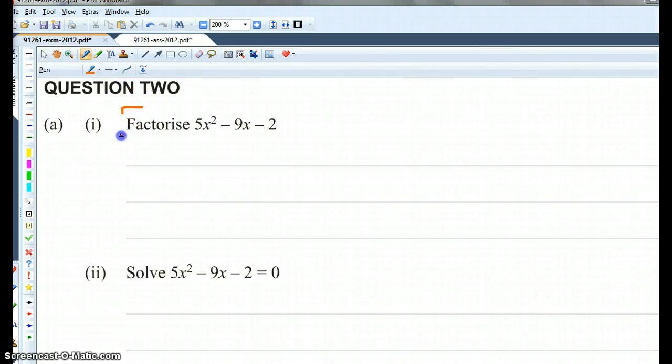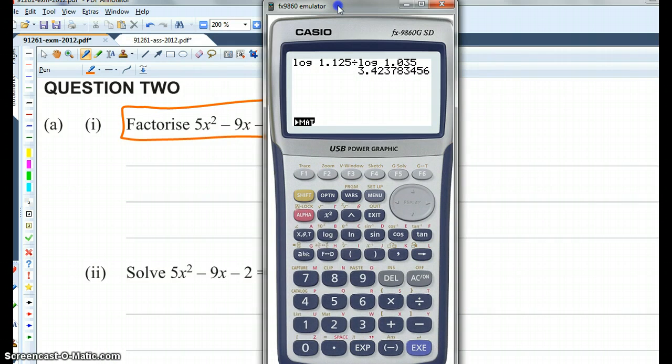I'm going to show you two different ways to factorize this. The first way is what I call the Cheats way.